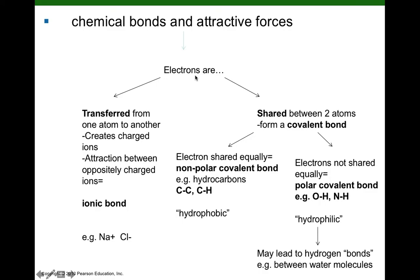Say we have two atoms. Atoms are most stable if their outermost electron shell, the valence shell, is filled. In some cases, atoms will transfer electrons — they'll lose an electron or gain an electron. If an atom loses an electron, it has more protons than electrons and has a positive charge; we call it a cation. Other atoms might accept an electron, giving them more electrons than protons, so they have a negative charge — those negatively charged ions are called anions. The attractive force between positively charged ions and negatively charged ions is called the ionic bond.